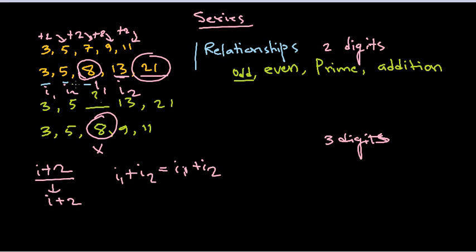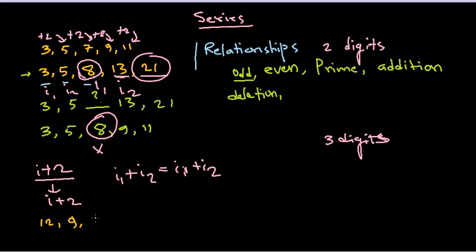Beyond odd/even/prime, you can look for addition of a constant — like adding 2, as in the first example. You can also look for addition of consecutive terms, as in the second example. Then there's deletion: for example, 12, 9, 6 — we're simply subtracting 3 each time. Multiplication or division can also occur, but these are very rare. Addition and deletion are most common.